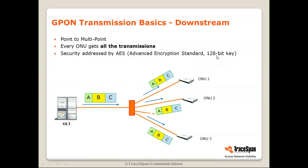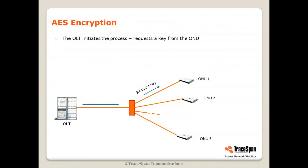AES — Advanced Encryption Standard 128-bit key. The OLT initiates the process because it's the master of the network, but it's not correct for the OLT to generate the key, because if the OLT generated the key, all the ONUs would see it and you'd lose the whole point of the encryption. So the OLT requests the key, and then the ONU generates it. Getting back to Tom and Harry — if an ONU sends a key, only the OLT can see it; the other ONUs will not see it because of this isolation. This way, the key is kept only between that ONU and the OLT.